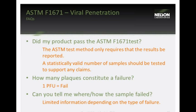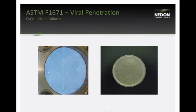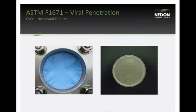Once a failure occurs, we can sometimes tell how or where the sample failed. For visual failures, we can identify whether it came from a seam, tie, or other location. For non-visual failures, there's nothing to indicate how or where the failure occurred — we can detect that virus got through microscopically, but not how. That's one limitation of the test: it tells us pass or fail but not much more.